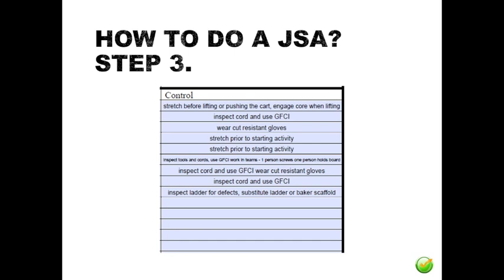In our example, we discuss how to plan to control the hazards associated with hanging drywall. Stretching before we start and throughout the day will help combat strains and sprains. Inspecting our tools and equipment will help prevent electrocution. Working in a two-person team helps when lifting the drywall and holding the sheet in place to screw it off.